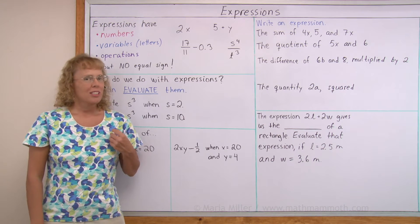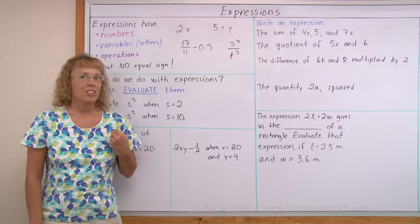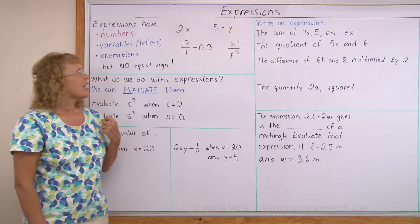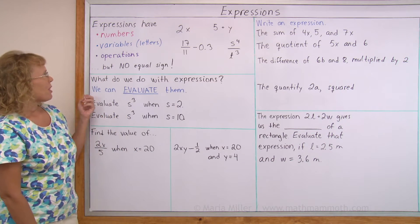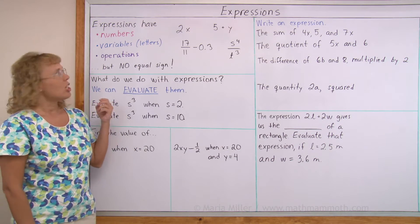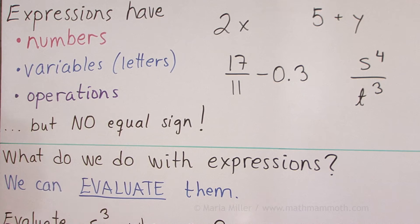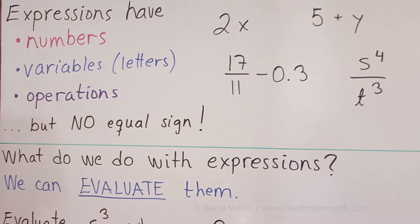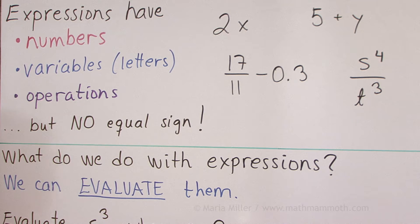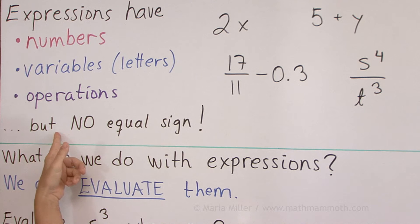So what is an expression in mathematics? It is something that consists of numbers, and then variables or letters, and then different operations like addition, subtraction, multiplication, division, could be exponents, square roots, and so on. But it does not have an equal sign.